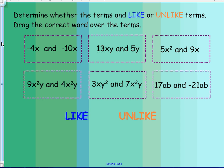We're going to do a little activity on the smart board. We are going to determine whether the terms are like or unlike terms — drag the correct word over the term. In each of these boxes there are two terms. We have to decide if they are like terms or if they are not like terms. Take a second, look at them, and think about which ones are like terms and which ones are not.